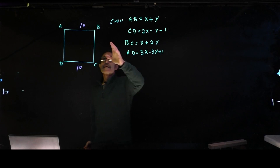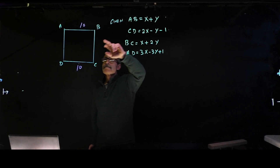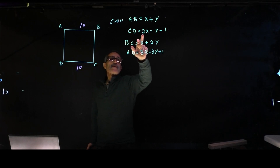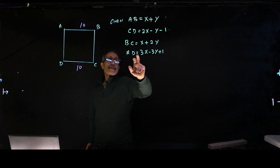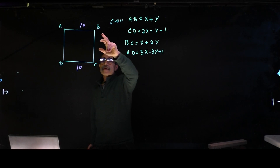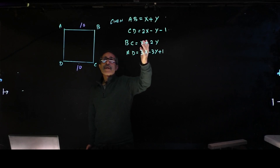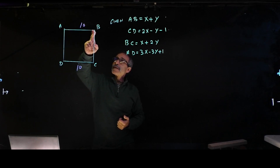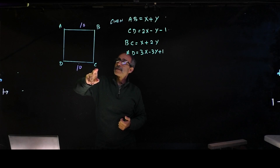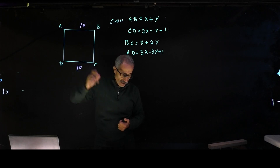So we have this next problem. They tell us that AB equals x plus y, DC equals 2x minus y minus 1, AD equals 3x minus 3y plus 1, and BC equals x plus 2y. They want to know what x and y are. We know that in a rectangle or parallelogram, AB equals DC and AD equals BC — opposite sides are equal — so we'll take advantage of that.